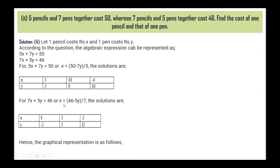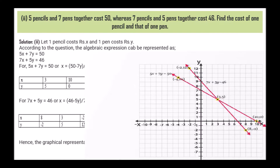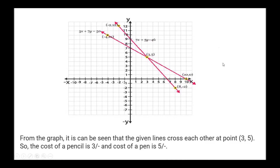For 7x + 5y = 46, or x = (46 - 5y) / 7, the solutions are: x = 8, y = -2; x = 3, y = 5; x = -2, y = 12. The graphical representation is as follows. From the graph, it can be seen that the given lines cross each other at point (3, 5). So the cost of a pencil is 3 and the cost of a pen is 5.